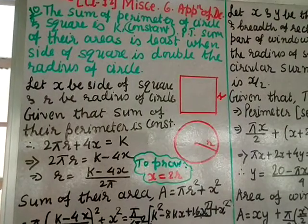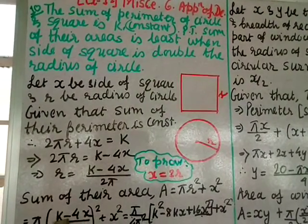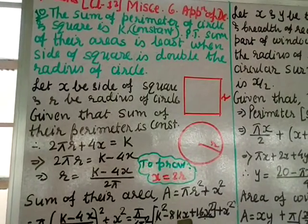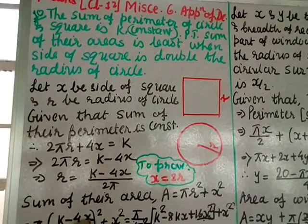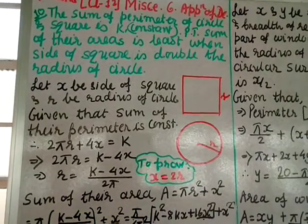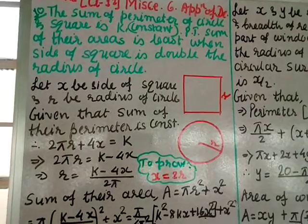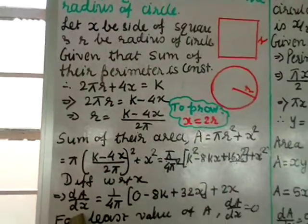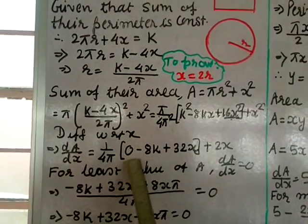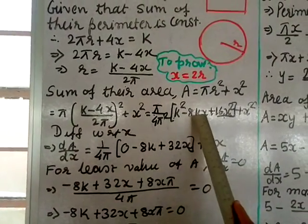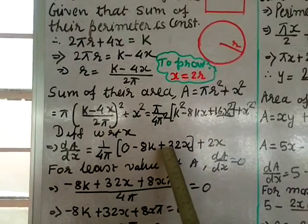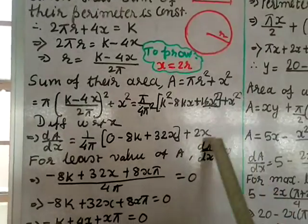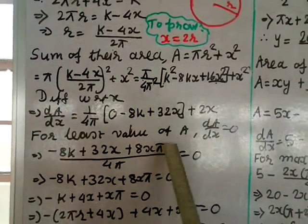Expanding: the denominator 2π squared is 4π², so we get (1/4π)[k² − 8kx + 16x²] + x². After cancelling π, differentiate with respect to x: dA/dx = (1/4π)[−8k + 32x] + 2x.